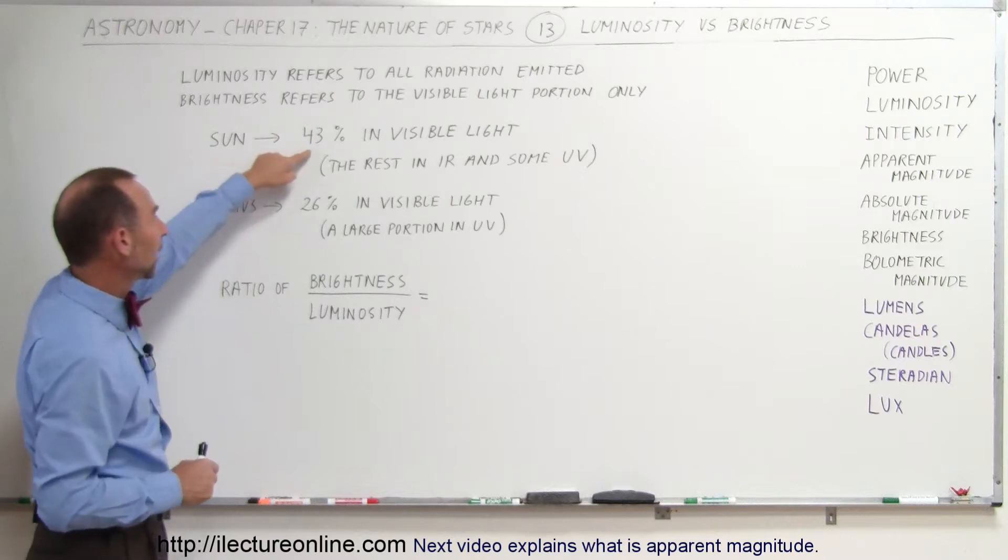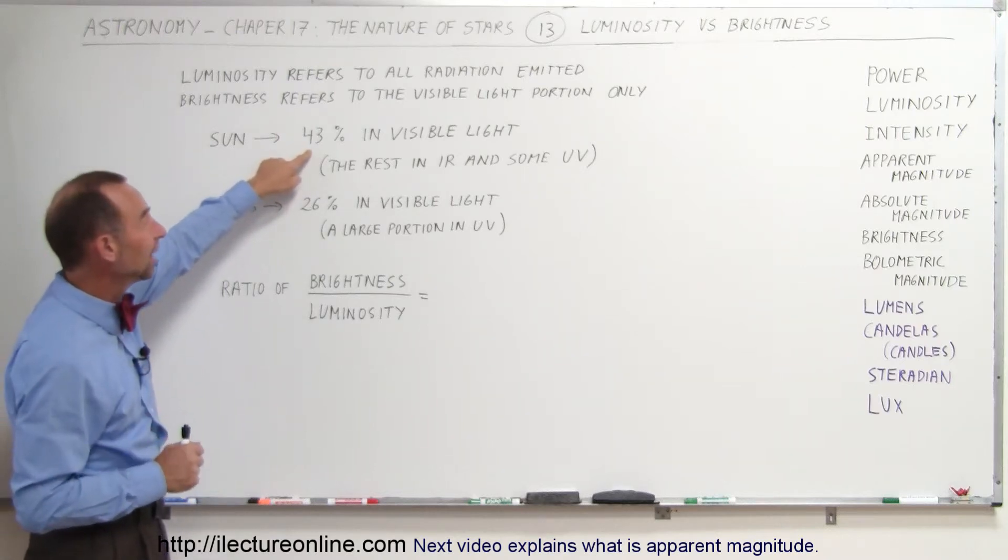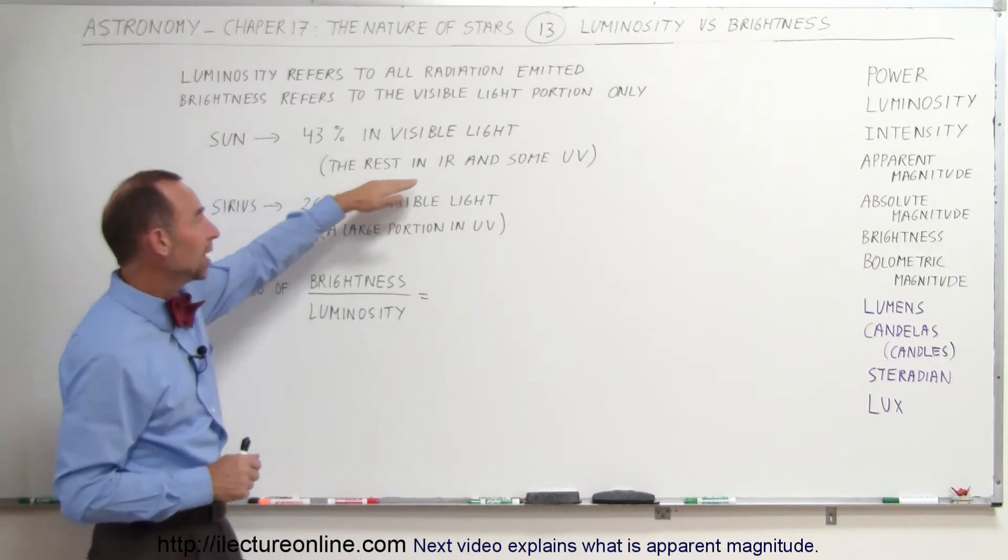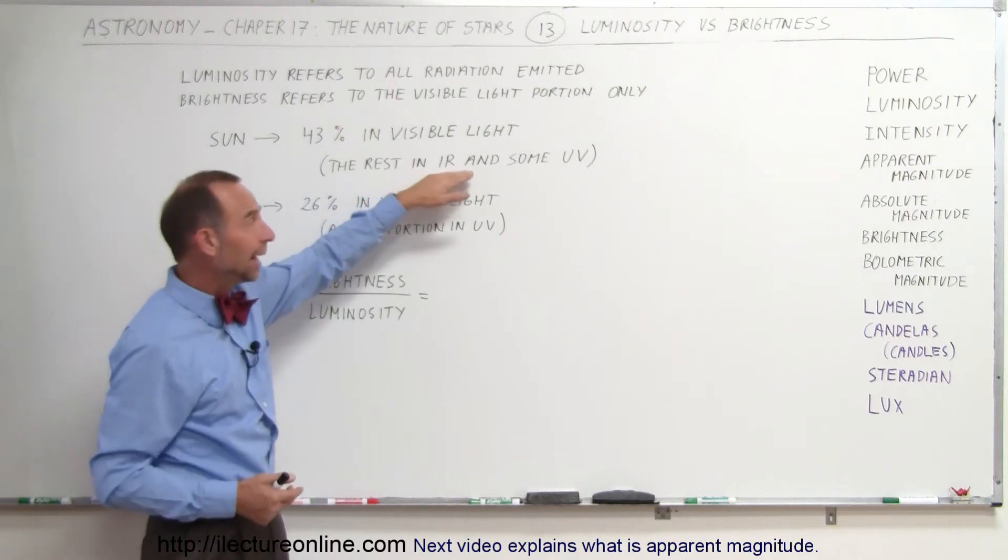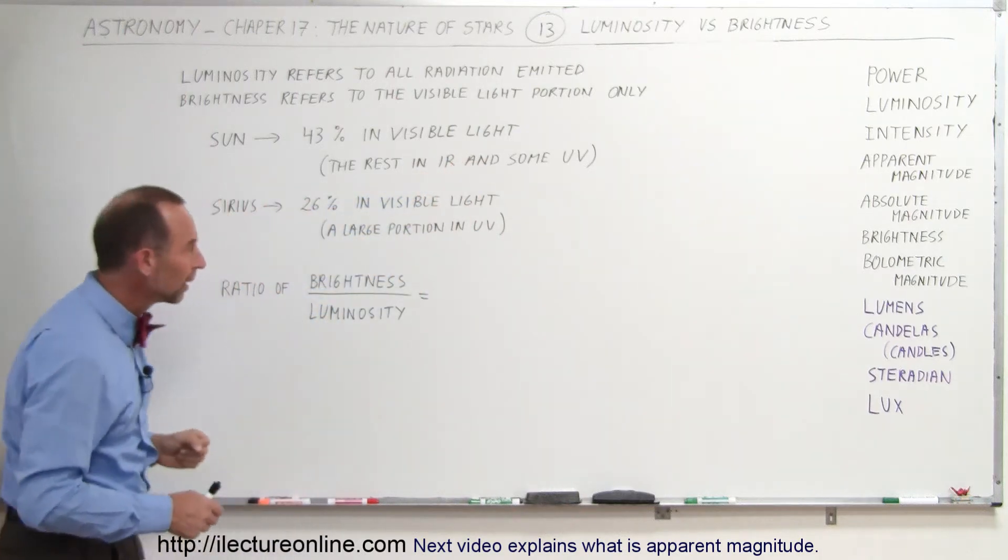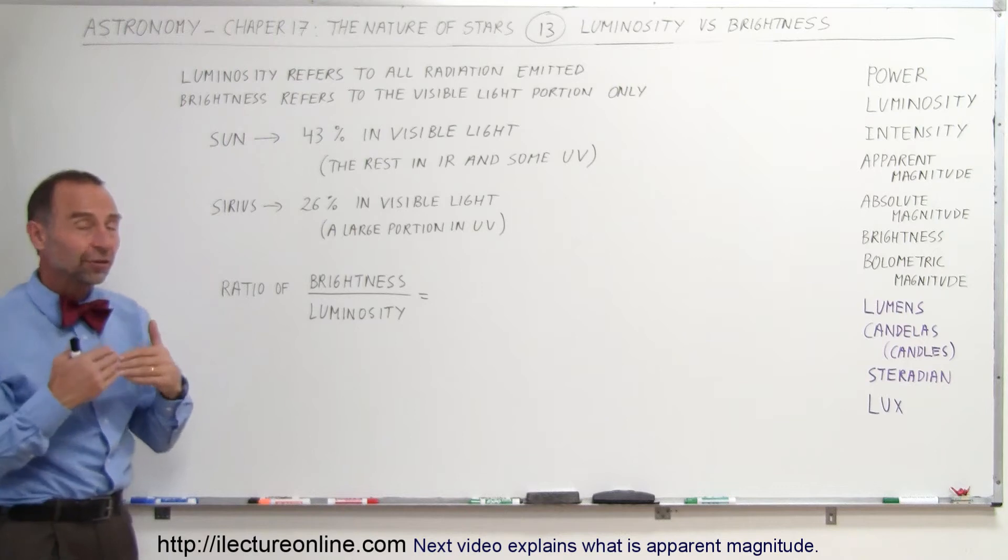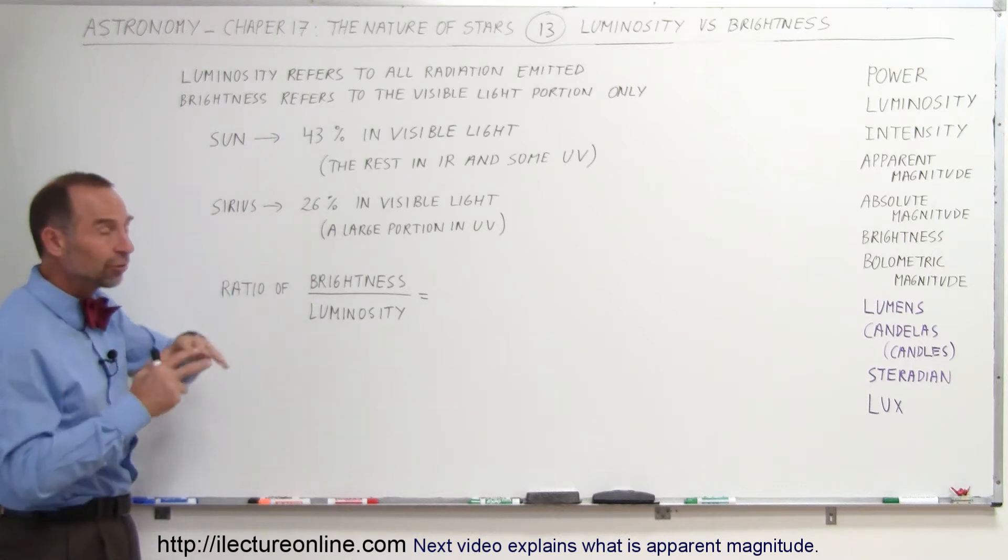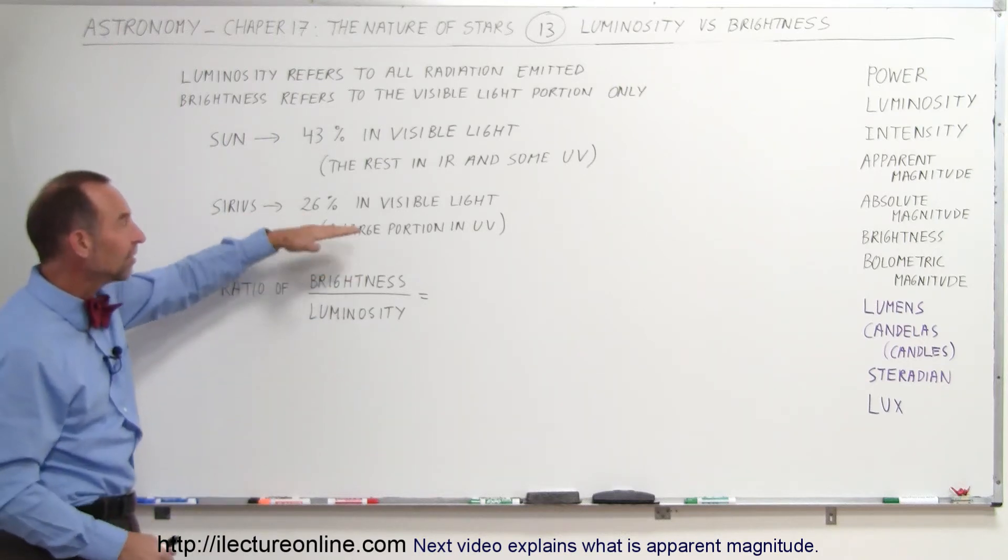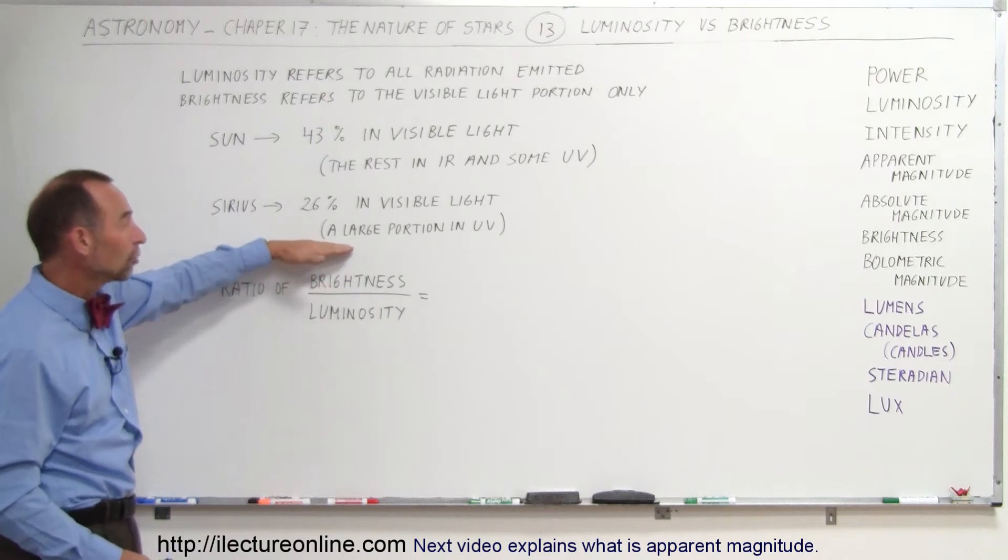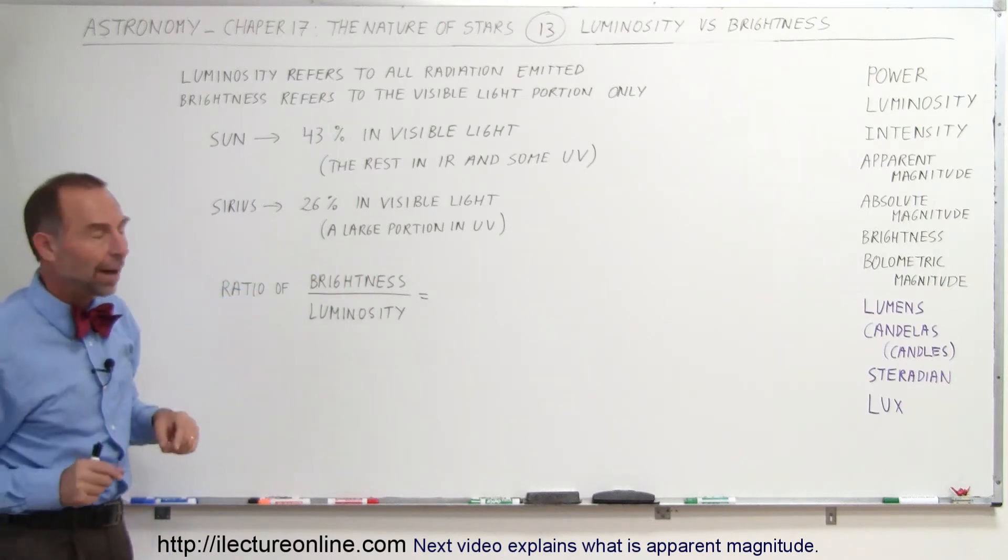In the case of the Sun, the visible light portion is about 43%, and therefore the rest is emitted in the infrared and some in the UV. For Sirius, the portion is different. Only 26% of the total energy emitted from Sirius is in the visible light. A large portion of it is in UV and some infrared.